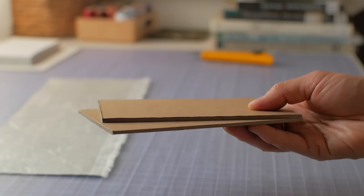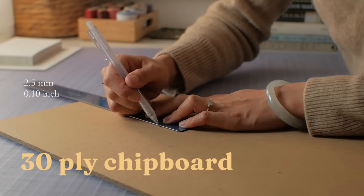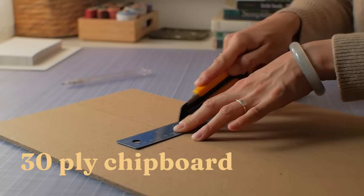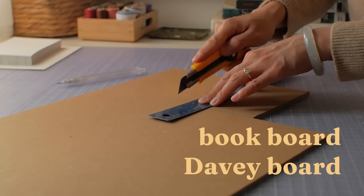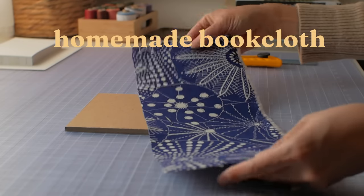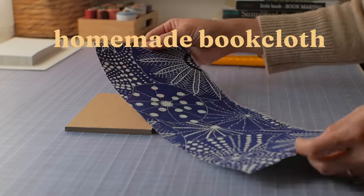Let's make the covers. This is 30-ply chipboard from Blick. It's 2.5mm thick or 1 tenth of an inch. You can also look for book board or Davey board. I made this book cloth with fabric, heat and bond, and tissue paper. I'll link my book cloth tutorial in the description.